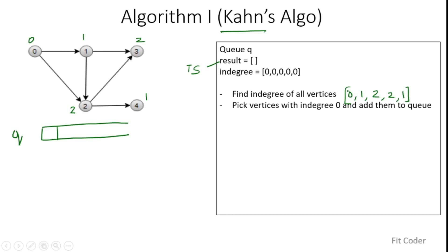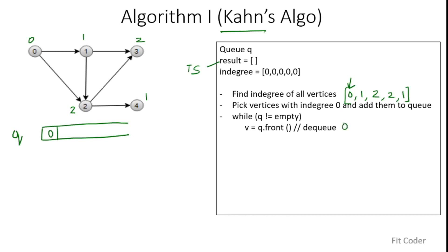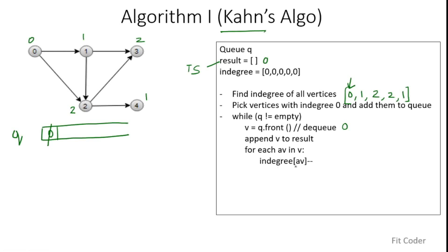Next, pick vertices with indegree zero and add them to the queue. Vertex 0 has indegree zero, so we add it to the queue. While the queue is not empty, we check the front element, pop it — so v becomes 0 — and append v to the result. For each adjacent vertex of v: adjacent vertices of 0 are 1 and 2. We decrement their indegrees: indegree of 1 becomes 0, and indegree of 2 becomes 1. Since vertex 1 now has indegree 0, we push it into the queue.